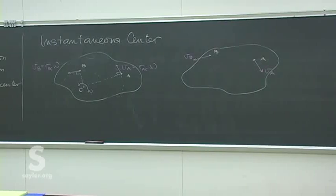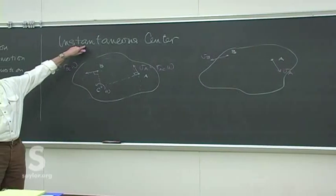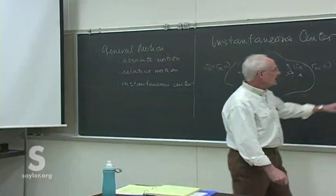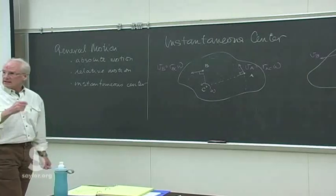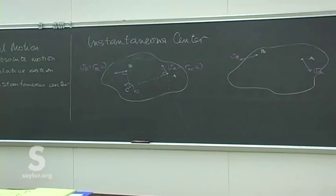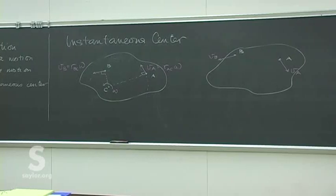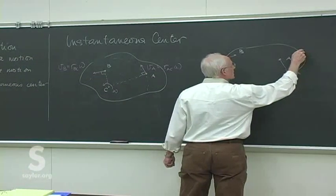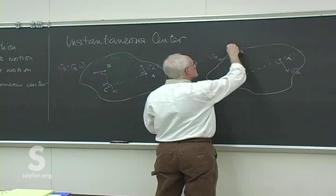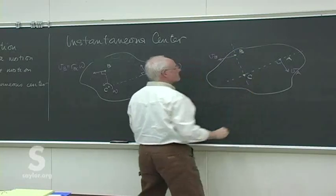If we draw perpendicular lines to those vectors, those two lines will cross somewhere at what is the instantaneous center of rotation for this object. It may be in general motion, but for a single instant in time it's as if it's rotating about a single point. It's not unlike what we saw with the wheel rolling along the ground — the contact point is not moving at all, and it's as if at that instant every other point was rotating around that point. So where those perpendiculars cross is an instantaneous center.